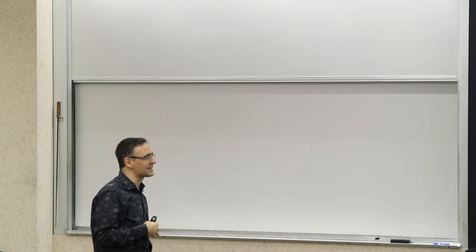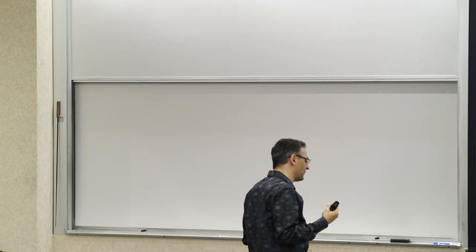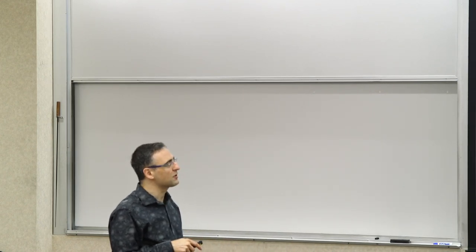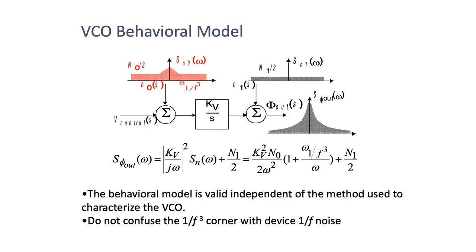How do we model noise in the PLL? We know the VCO has a 1/f², 1/f³, and flat region in its phase noise response, and can be modeled as an ideal integrator. We can produce the effect of 1/f² noise by feeding white noise into the control voltage input of the VCO — since it acts as an ideal integrator, integration is 1/s, and looking at the power gives 1/ω². If you feed it with 1/f noise, you get 1/f³ noise. However, be careful that the behavioral model includes a corner frequency corresponding to the 1/f³ corner of the VCO, not the 1/f noise of the oscillator itself.